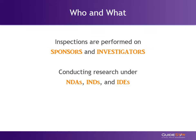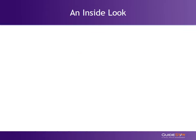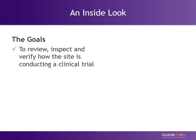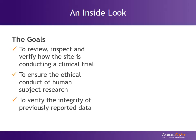To help with compliance, the office provides program manuals specific to IRBs, clinical investigators, and sponsors. All of these are great references to better ensure that your program maintains compliance. The goal of an audit is to review, inspect, and verify how your site is conducting a clinical trial. The FDA auditor will evaluate the ethical conduct of human subject research and integrity of previously reported data.